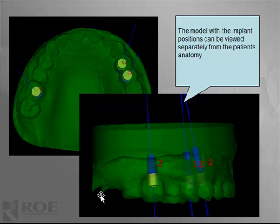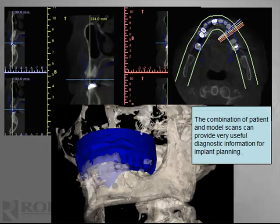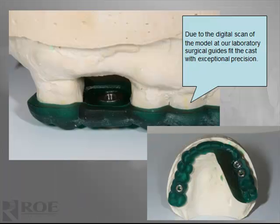You can also choose to remove the patient's anatomy and just look at the implant plan within the virtual model. The combination of patient and model scans can provide very useful diagnostic information for implant planning, and it can be very helpful in getting an excellent surgical result while simplifying the process. Another benefit of this process is extremely accurately fitting surgical guides — because the fit is dependent upon the accurate laser scan of the model, surgical guides are fitting better than ever.